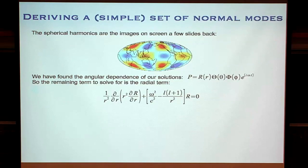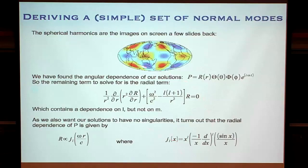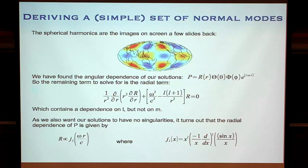We don't want singularities in the middle of our Earth — that would be awkward. It turns out we can solve this equation using a mathematical function called a Bessel function. It describes a particular way of displacement as a function of radius. The Bessel function equation has an L in it and our radial dependence has an omega in it. So what happens as a function of radius depends on both frequency and this angular order L.